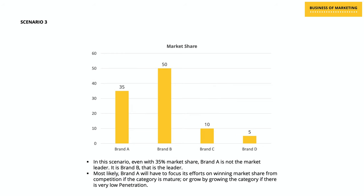And in the third scenario, we see that there are four different brands, with brand A also having 35% market share. However, there is another competitor — brand B — which has a significantly higher market share at 50%. In this scenario, it would not be wrong to assume that brand A would be focusing its efforts on winning market share from competition if the category is mature, or on growing the category if it has very low penetration. These three examples highlight how brand A, with the same absolute market share of 35%, has a very different role and focus when it comes to its marketing efforts because of the realities on the ground. And this is why knowing the relative market share of brand A becomes extremely crucial.